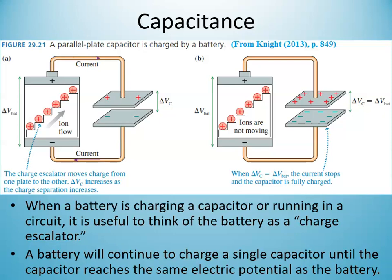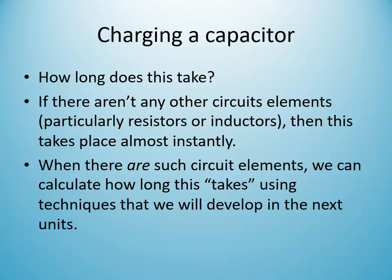The battery does work by separating charges from one electric plate and moving them to the other through chemical reactions. Eventually you reach a point of equilibrium where there is a maximum amount of charge stored on each plate, equal to the charge of the battery. The exact rate at which this happens depends on the capacitor and elements of the circuit like resistors — sometimes microseconds, sometimes seconds or longer.